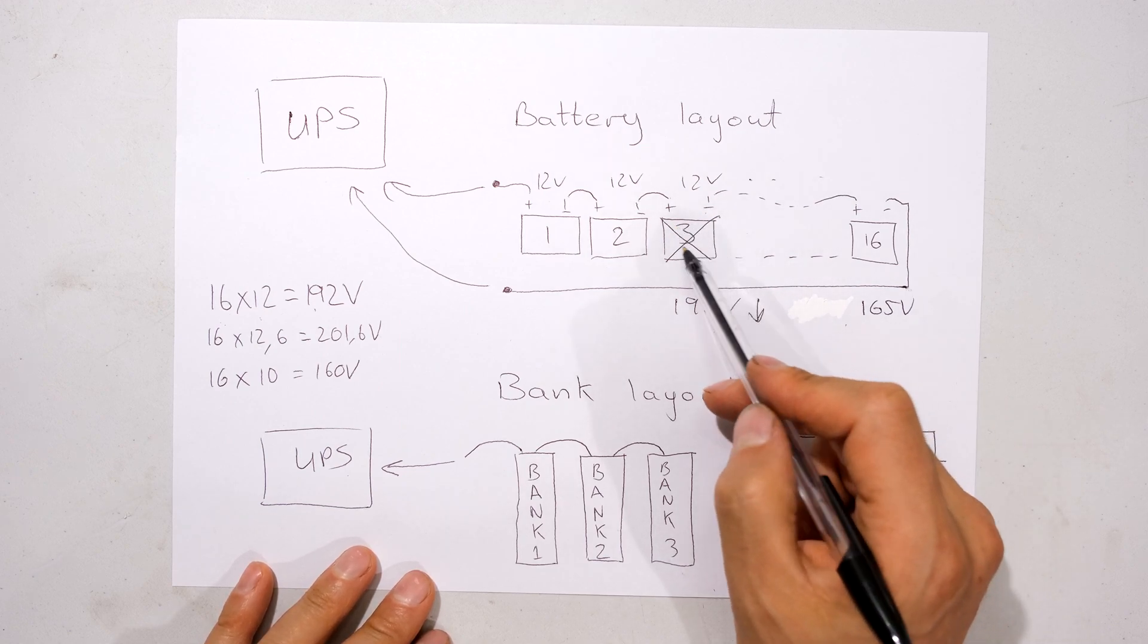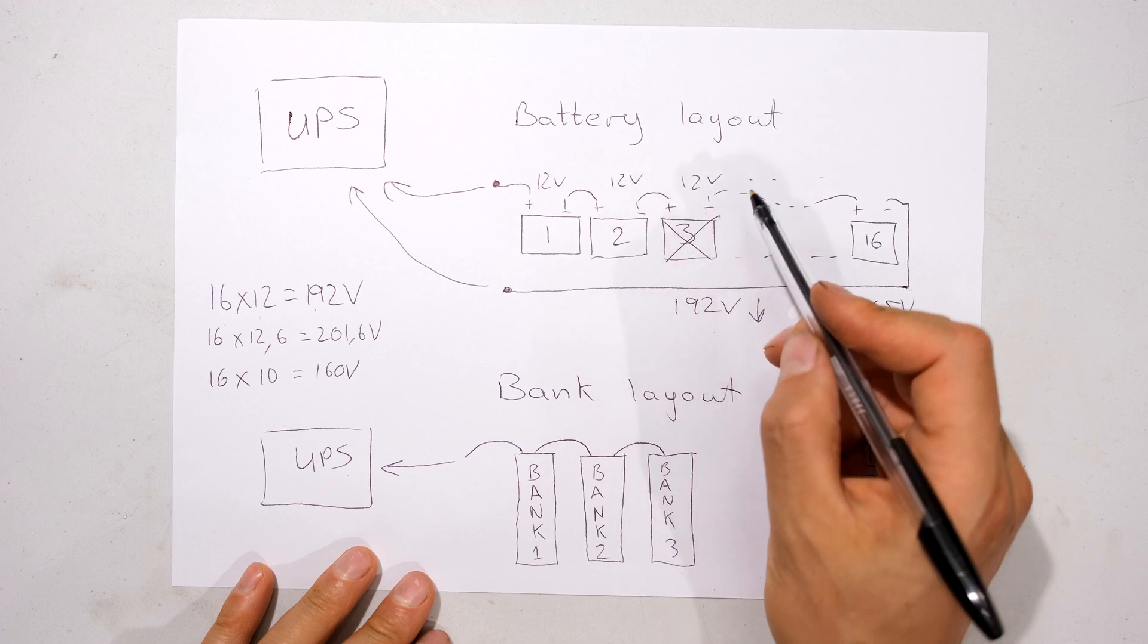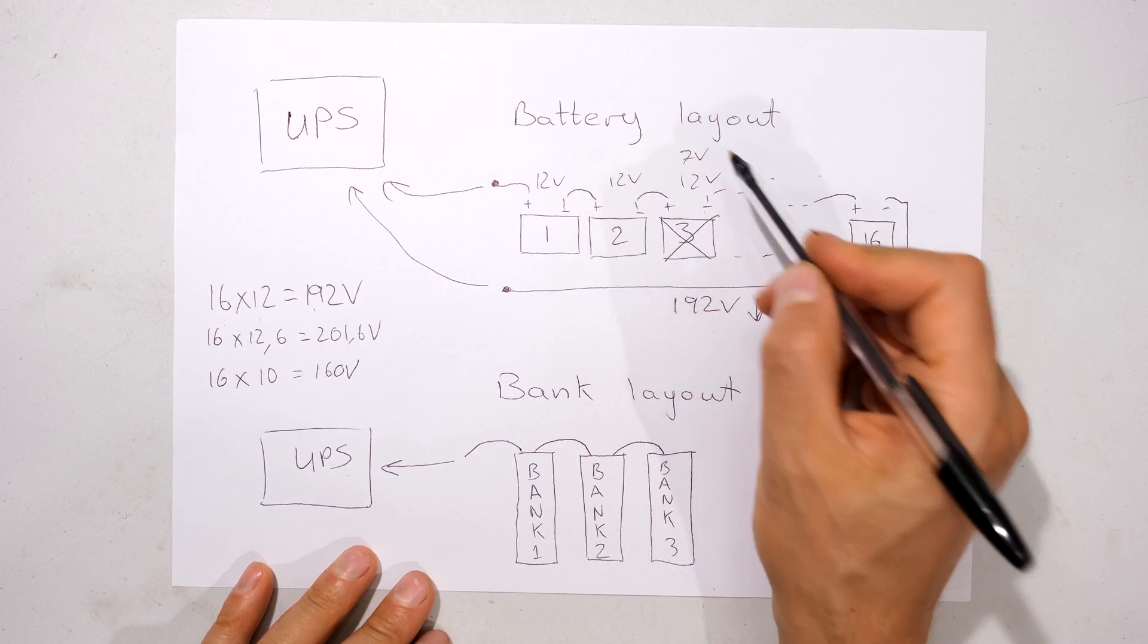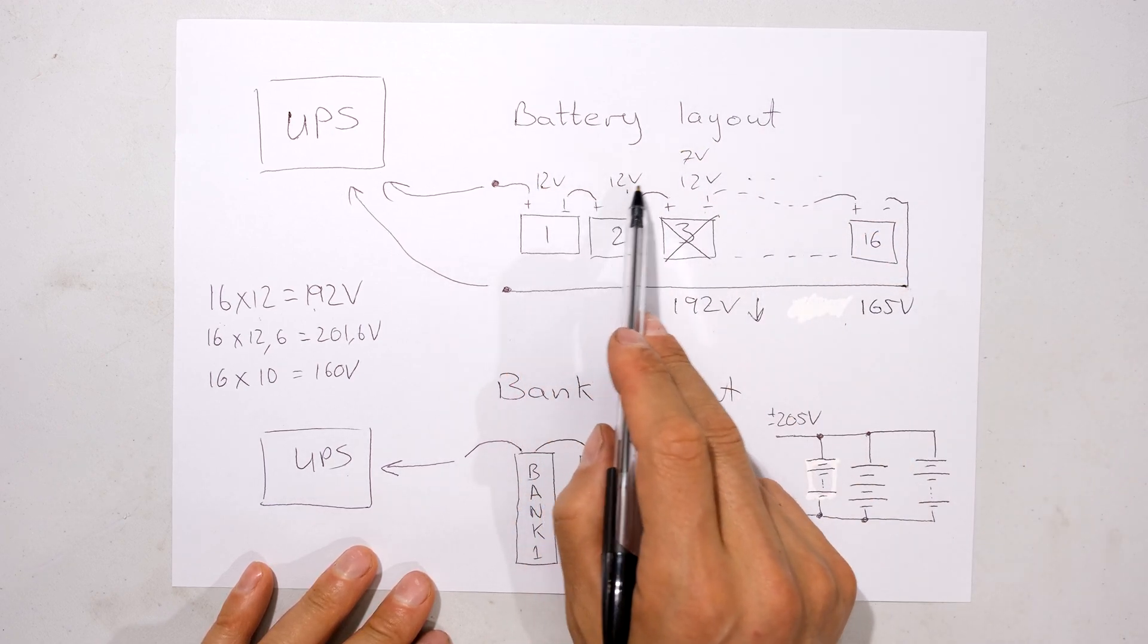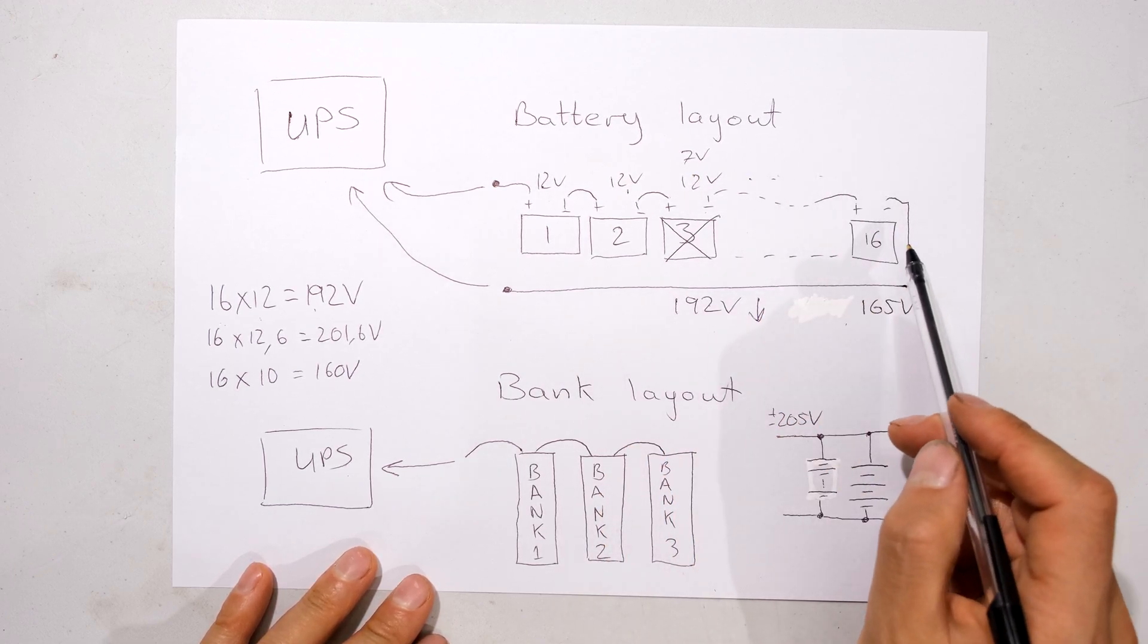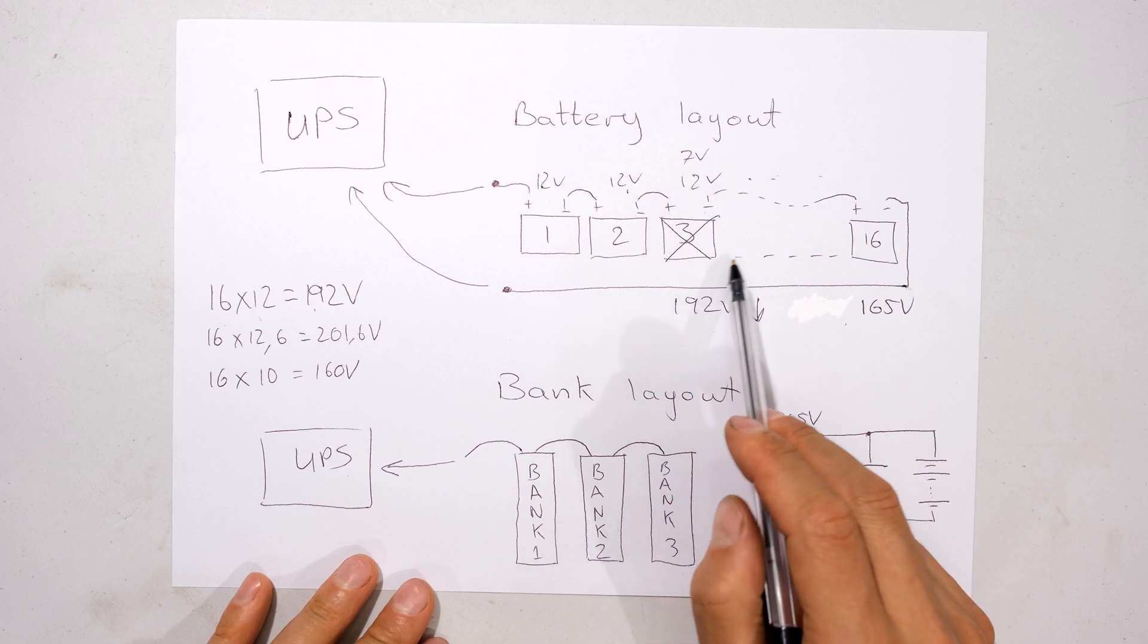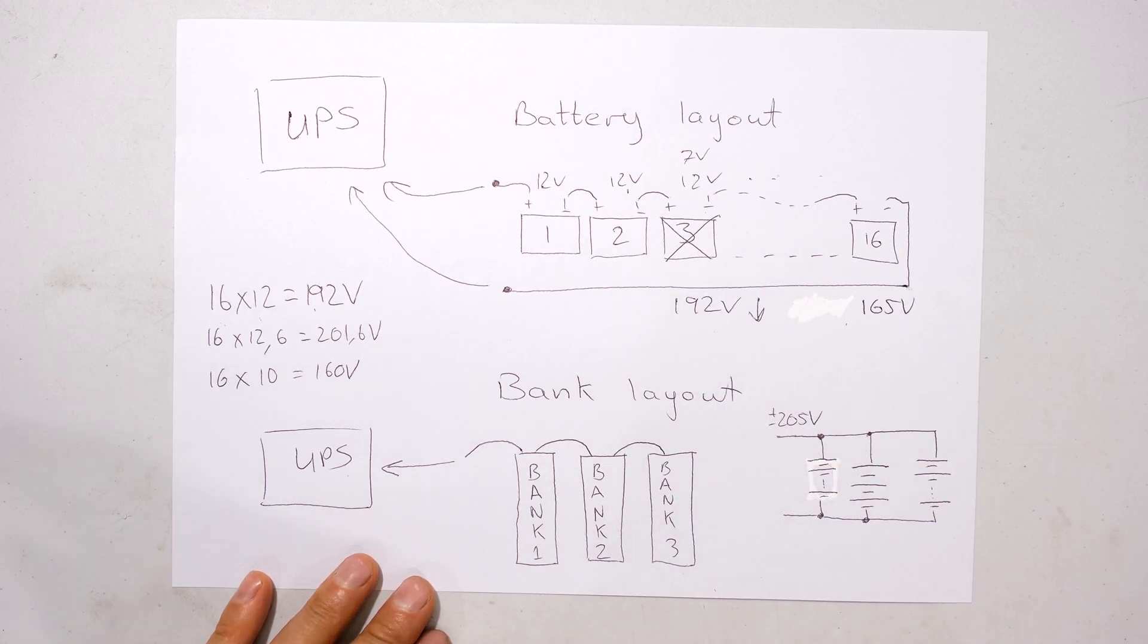You might find that one falls out of service. What I mean by that is its internal resistance breaks down and you find that the voltage here goes to say seven volts. So now you've got a 12, 12, 7, and then maybe another seven and maybe another seven, and what ends up happening is these batteries start to get depleted a bit quicker.